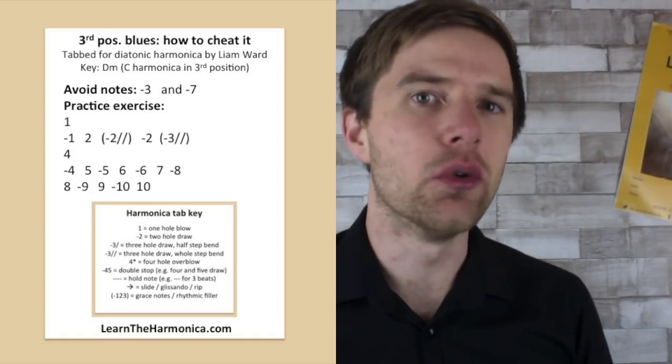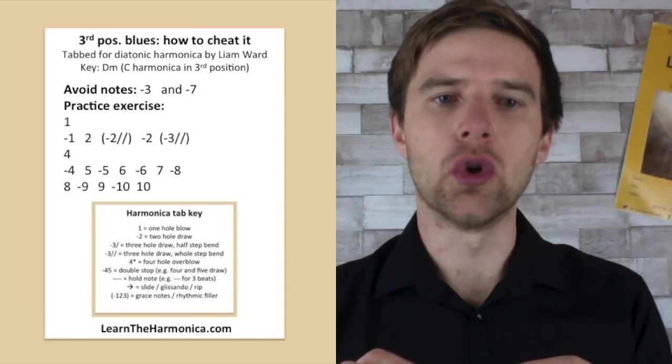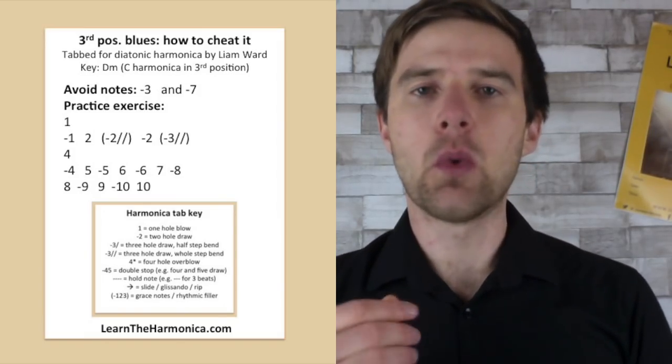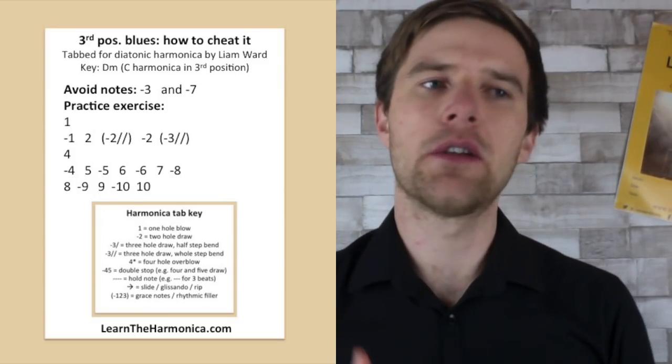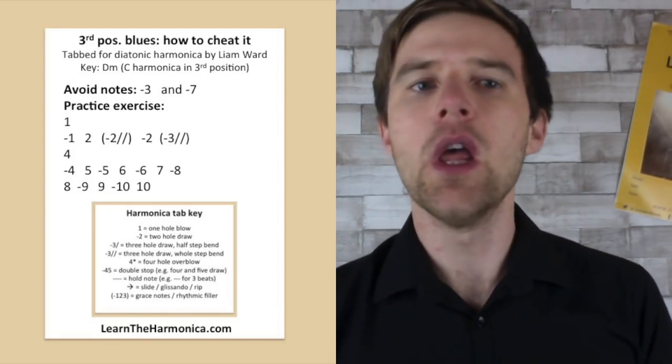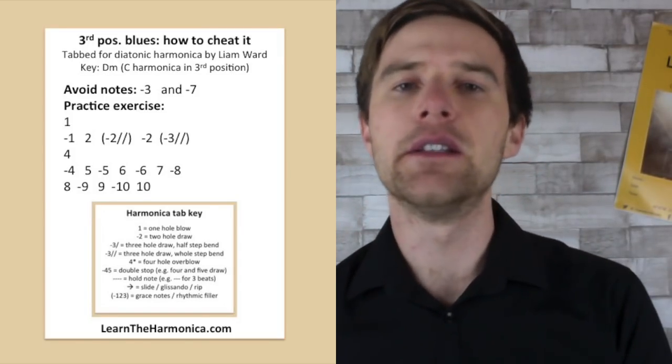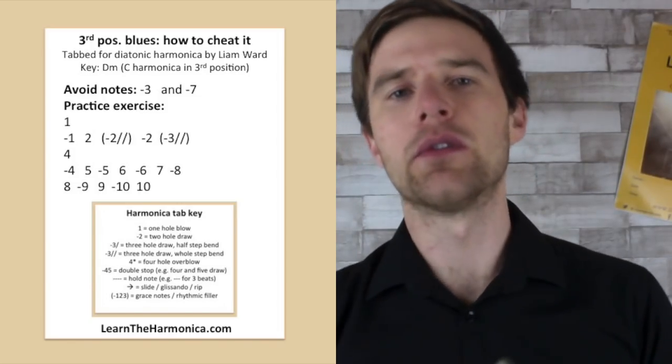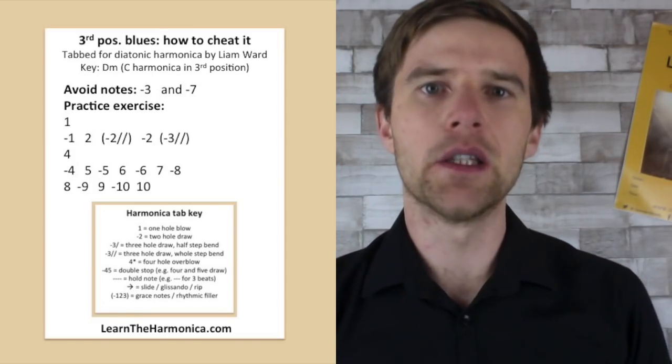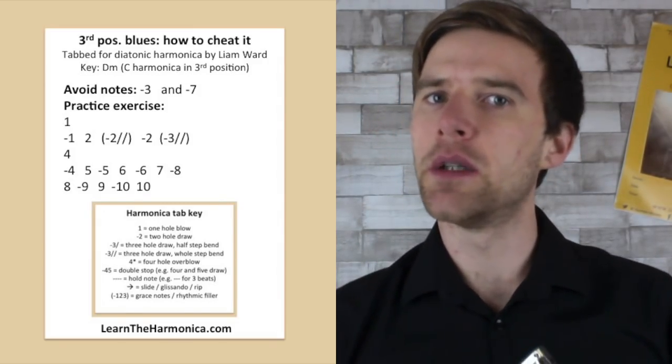The second thing I want you to do when you're cheating in third position is to use the one draw and the four draw and then also the eight draw as your landing notes. So what I mean by that is in second position, often you finish up on the two draw or the six blow. In first position, often you end up on the one blow or the four blow. In third position, we want to rethink that and end up, start and end - sometimes you might start there and then go off and return on the one draw, four draw and the eight draw. And that will turn those notes we've just played from just sounding like a load of notes into sounding like they're based around a minor blues scale.